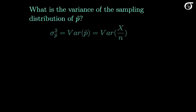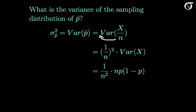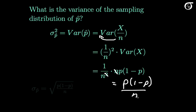What is the variance of the sampling distribution of P-hat? The variance of P-hat equals the variance of x over n. Recall that when we multiply a random variable by a constant, the variance gets multiplied by the square of that constant, so we take 1 over n out front but we need to square it. Since the variance of x is n times p times 1 minus p, the variance of P-hat equals p times 1 minus p over n. The standard deviation is the square root of p times 1 minus p over n.